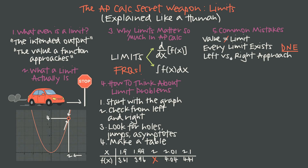A related mistake is ignoring the left-versus-right approach — it's the most reliable way to evaluate a limit. Track what the function does from the left, track what it does from the right, and that gives you the best chance of finding the limit or correctly concluding DNE. Also, don't forget to check for removable and non-removable discontinuities. A removable discontinuity tells us the function is not defined at that point, even if a table makes it look like it is.